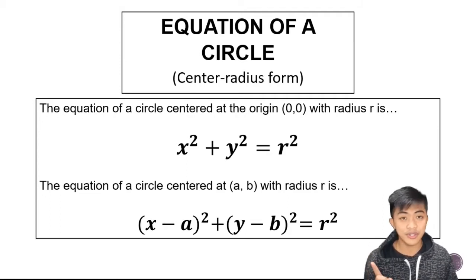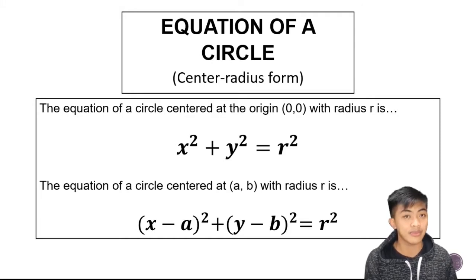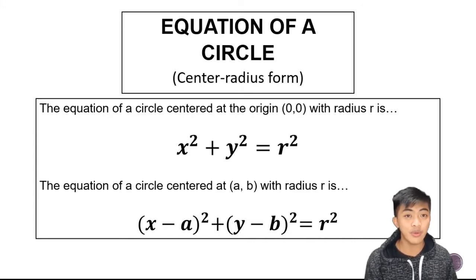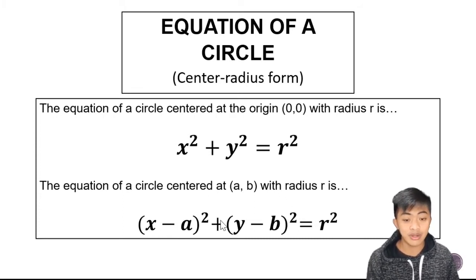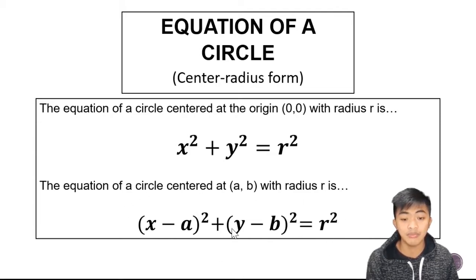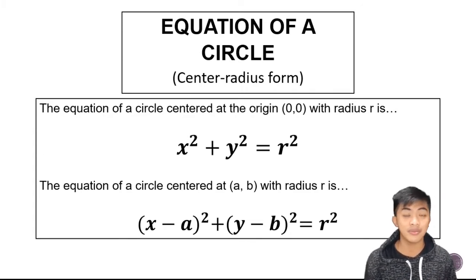So there are two forms. The first one is x squared plus y squared is equal to r squared. This is the equation of the circle if the center of that circle is on the origin. But if the center is not on the origin, then the equation will look like this: the quantity x minus a squared plus the quantity y minus b squared is equal to r squared. That is the equation of a circle with a center on any point on the Cartesian plane. In the next slide, let's try to illustrate the equation of a circle in center-radius form.